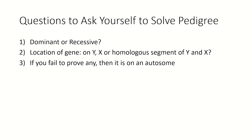The first question: I want to know whether my trait is dominant or recessive. The second question is the location of the gene - where is my gene located? Is it located on the Y chromosome, on the X chromosome, or on the homologous segments of the X and Y chromosomes? If I fail to prove any of these, then it would be on an autosome.